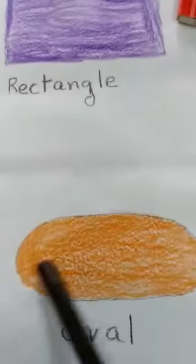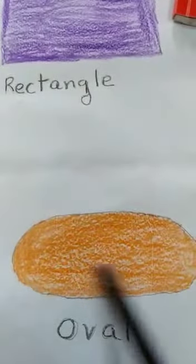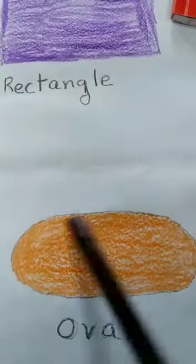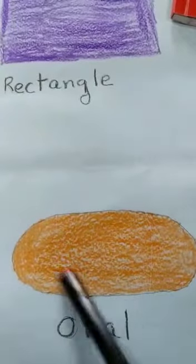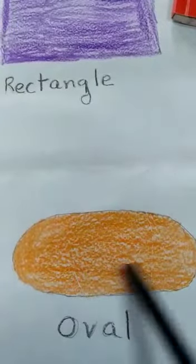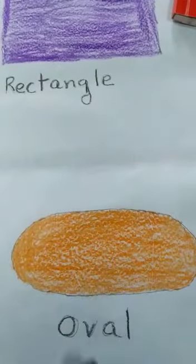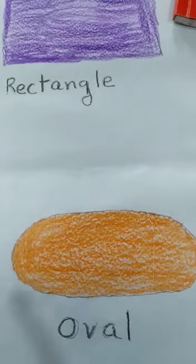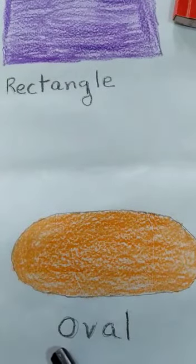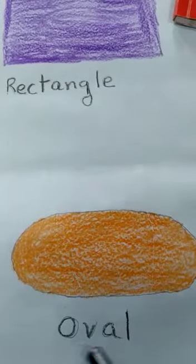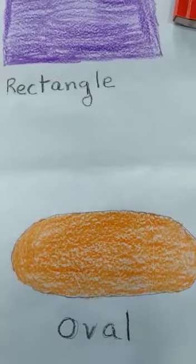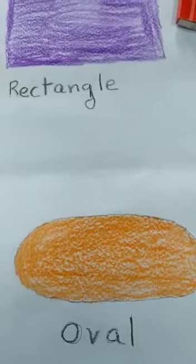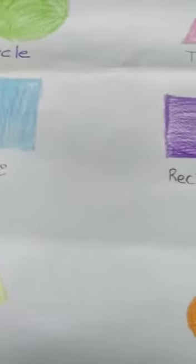And here you have an oval shape. Egg is oval in shape, right? So this is oval shape. What is the spelling? O-V-A-L. Say along with me: O-V-A-L. So these are the shapes in the chart.